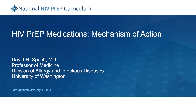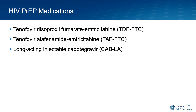Hello, I'm Dr. David Spock. In this brief mini-lecture, I'm going to discuss the mechanism of action for HIV PrEP medications. There are three medications that are currently approved for use as HIV PrEP in the United States: tenofovir disoproxil fumarate emtricitabine, TDF-FTC; tenofovir alafenamide emtricitabine, TAF-FTC; and long-acting injectable cabotegravir, CAB-LA.